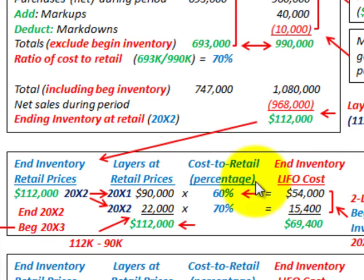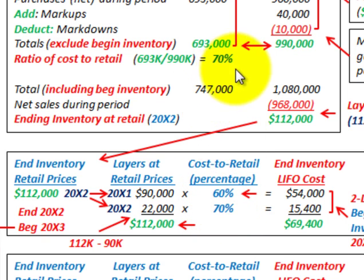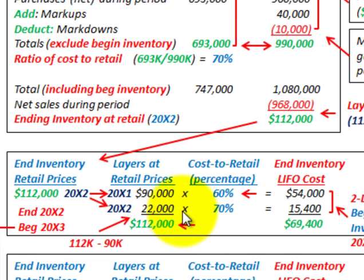To determine ending inventory at LIFO cost, we apply the cost-to-retail percentage to each layer. For the 20x1 layer, the cost-to-retail percentage was 60%, so 60% times $90,000 gives us $54,000. For the 20x2 layer of $22,000, we use the 70% ratio we calculated — based on purchases, markups, and markdowns, excluding beginning inventory — so 70% times $22,000 gives us $15,400. Total ending inventory at LIFO cost is $69,400.